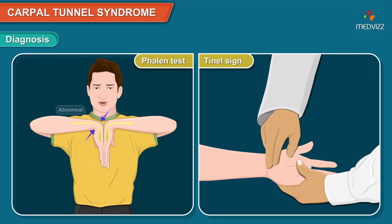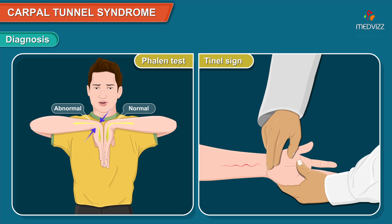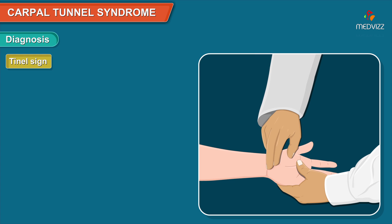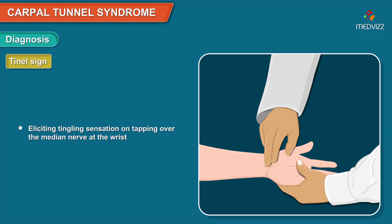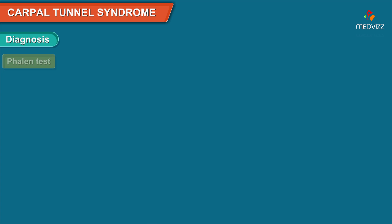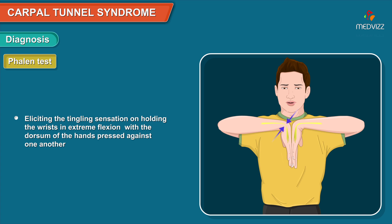Diagnosis can be made on physical examination with a positive Phalen's test or a positive Tinel sign. Tinel sign is positive when pain or tingling sensation is elicited on tapping the median nerve at the wrist. Phalen's test involves eliciting tingling sensation on holding the wrists in extreme flexion with the dorsum of the hands pressed against one another.